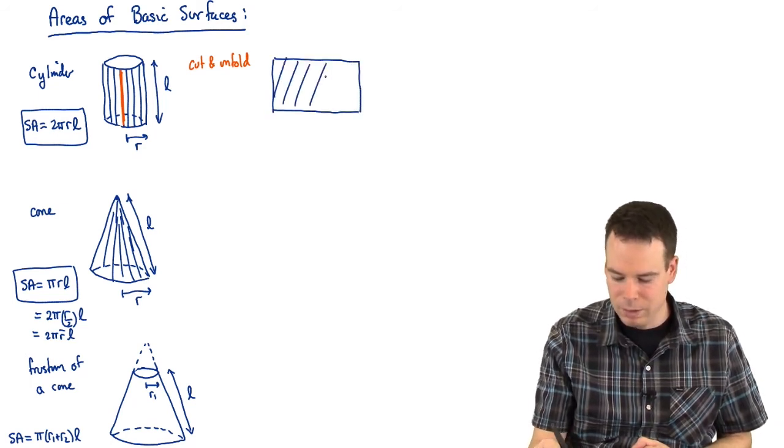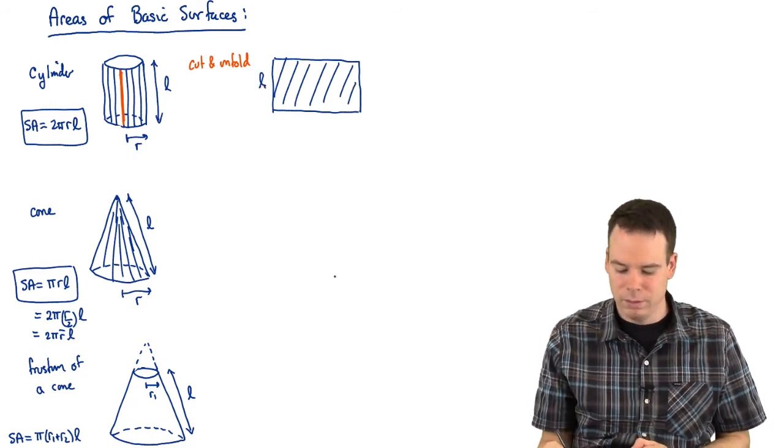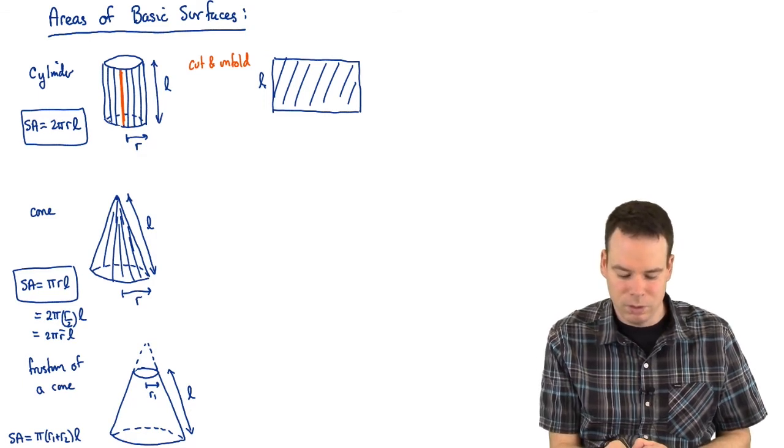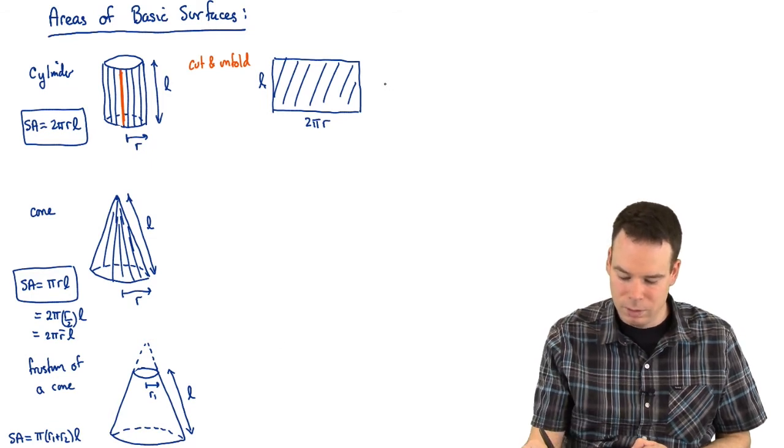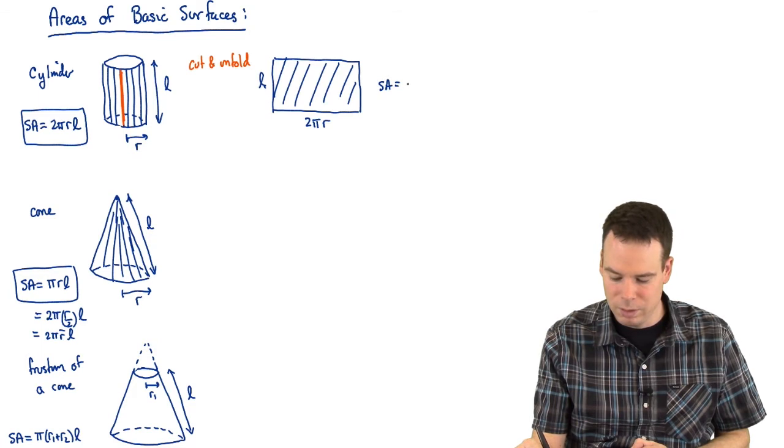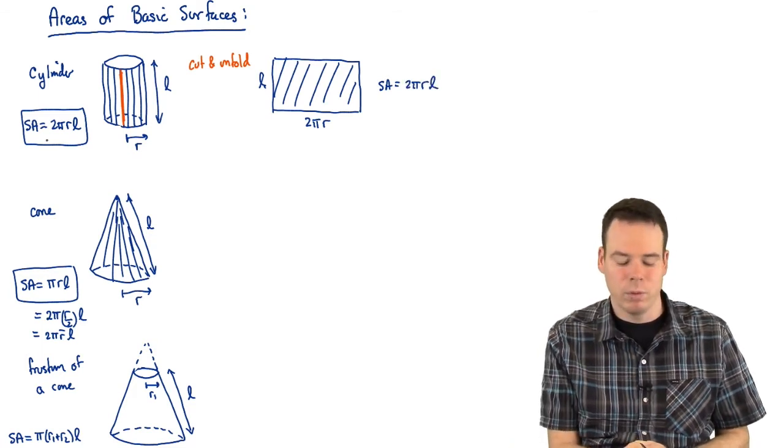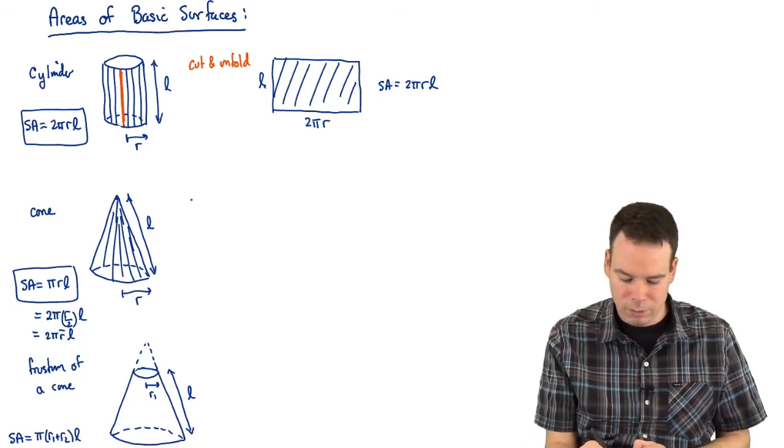So we get a rectangle. What's the height? The height is still L. What's the base of the rectangle? Well that's the circumference of the circle, so that's 2πR. So what's the surface area? The surface area or the area of this resulting object in this case is 2πRL. That's exactly what we wrote down for the surface area over here. So there was that cut and unfold. We can do the same thing here.